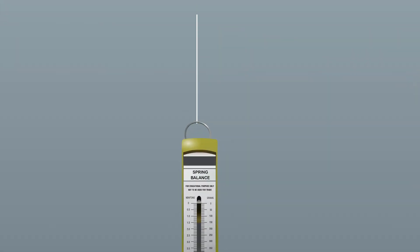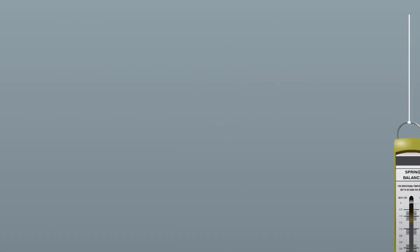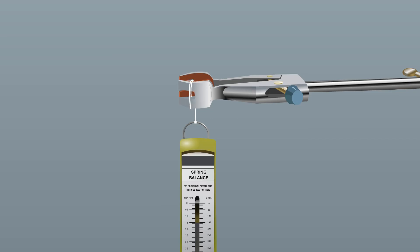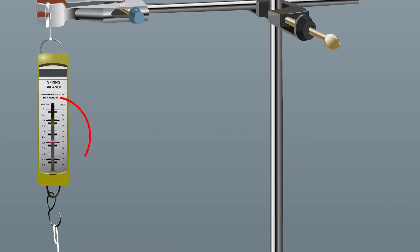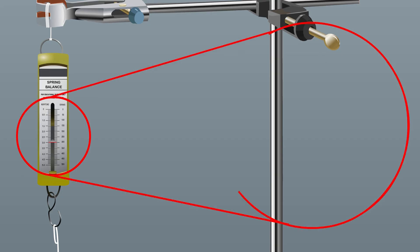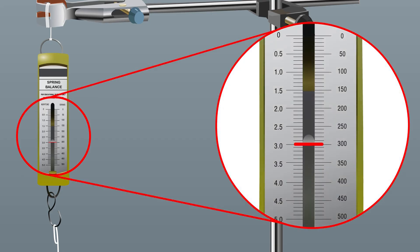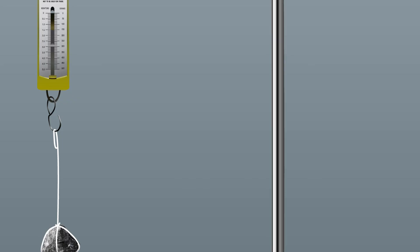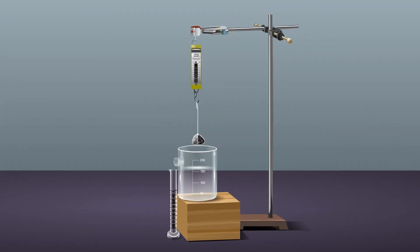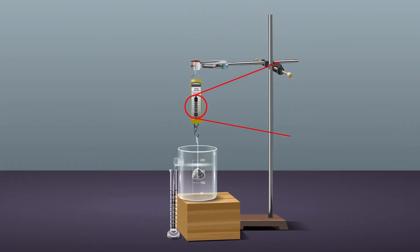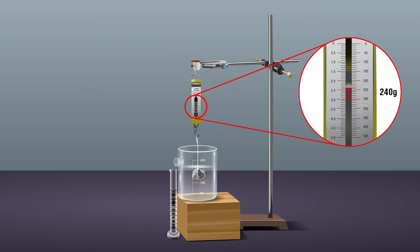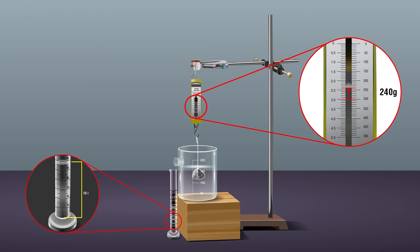Clamp the spring balance with the laboratory stand so that the object is suspended freely in the air. Measure the weight of the object in the air. Slide the spring balance until the object is immersed in salt water. Measure the weight of the object in salt water, and measure the volume of displaced salt water in the measuring cylinder.